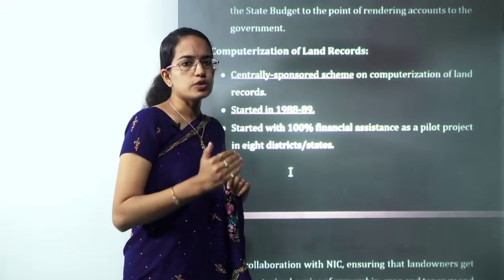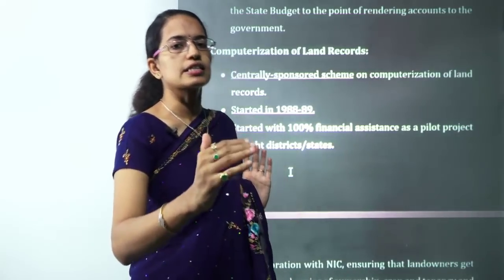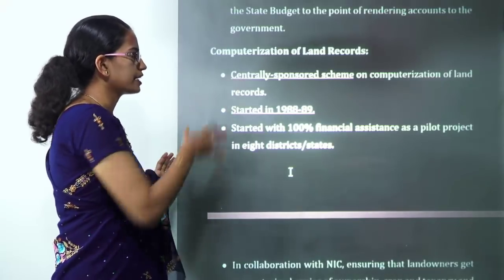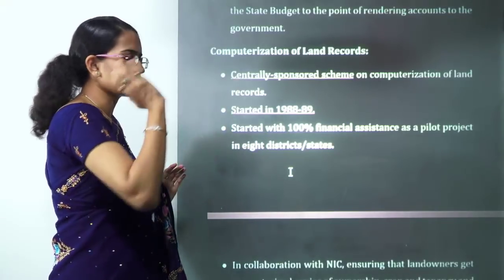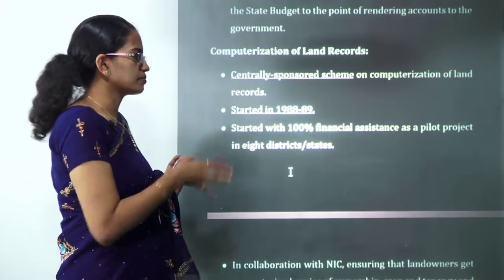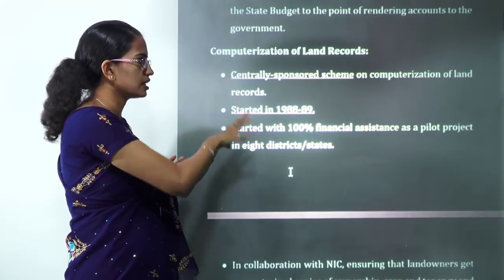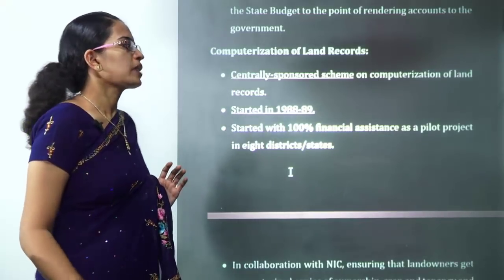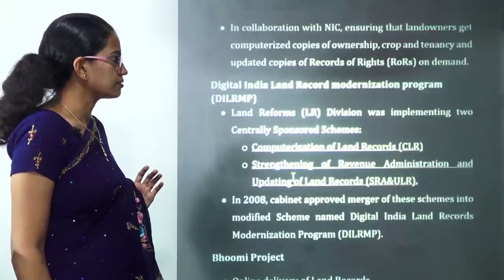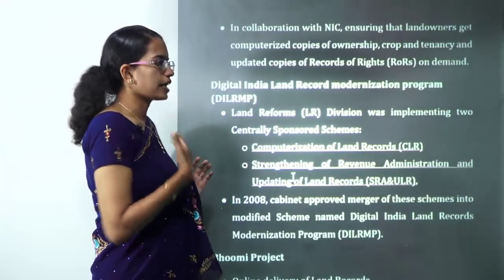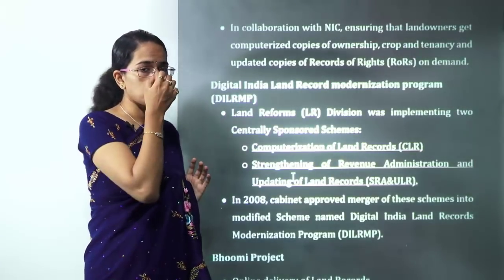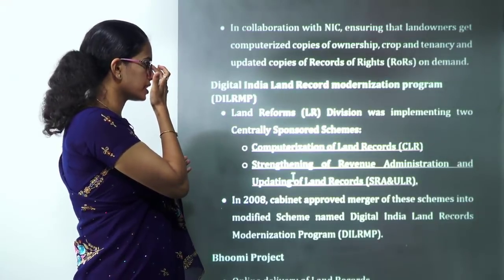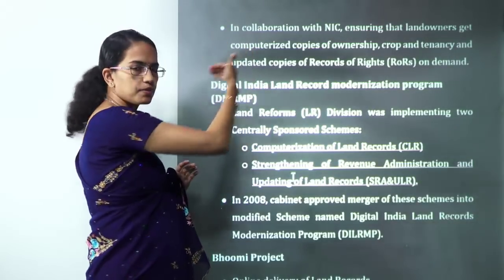All land records are being computerized under a centrally sponsored scheme that started back in 1988–89 with 100% financial assistance. It initially started as a pilot project in 8 districts. It has since been revamped with the National Informatics Centre (NIC) participating, and all record copies are being updated into digital format.